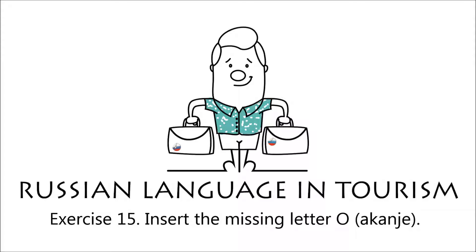Number two: Один. Number three: Отель. Number four: Окно. Number five: Хорошо. Number six: Оплата. Number seven: Погода. Number eight: Вода. Number nine: Когда.